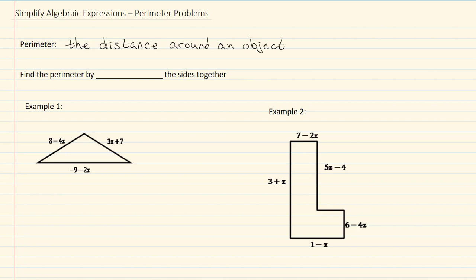We find the perimeter by adding all the sides together.